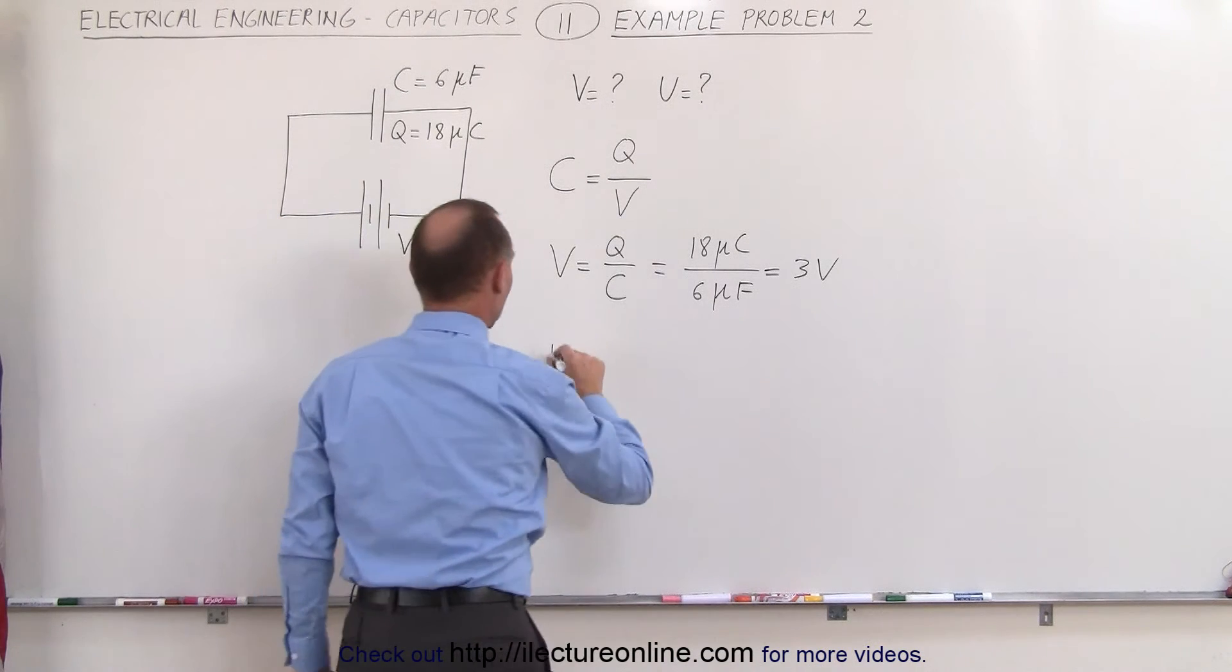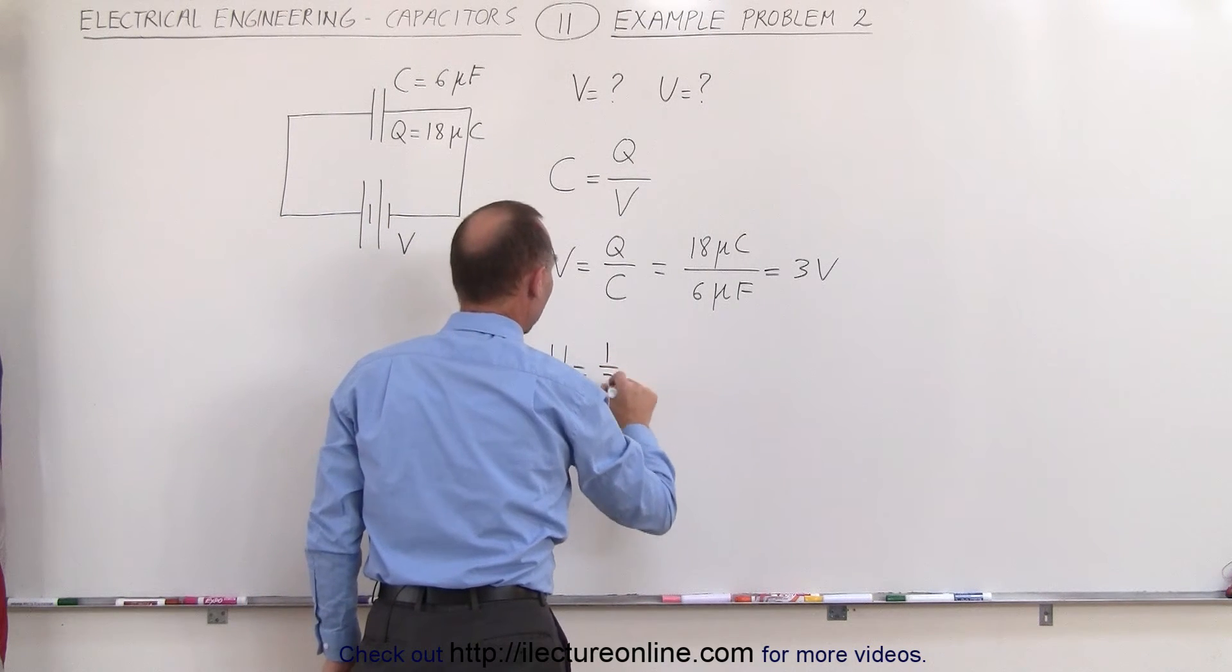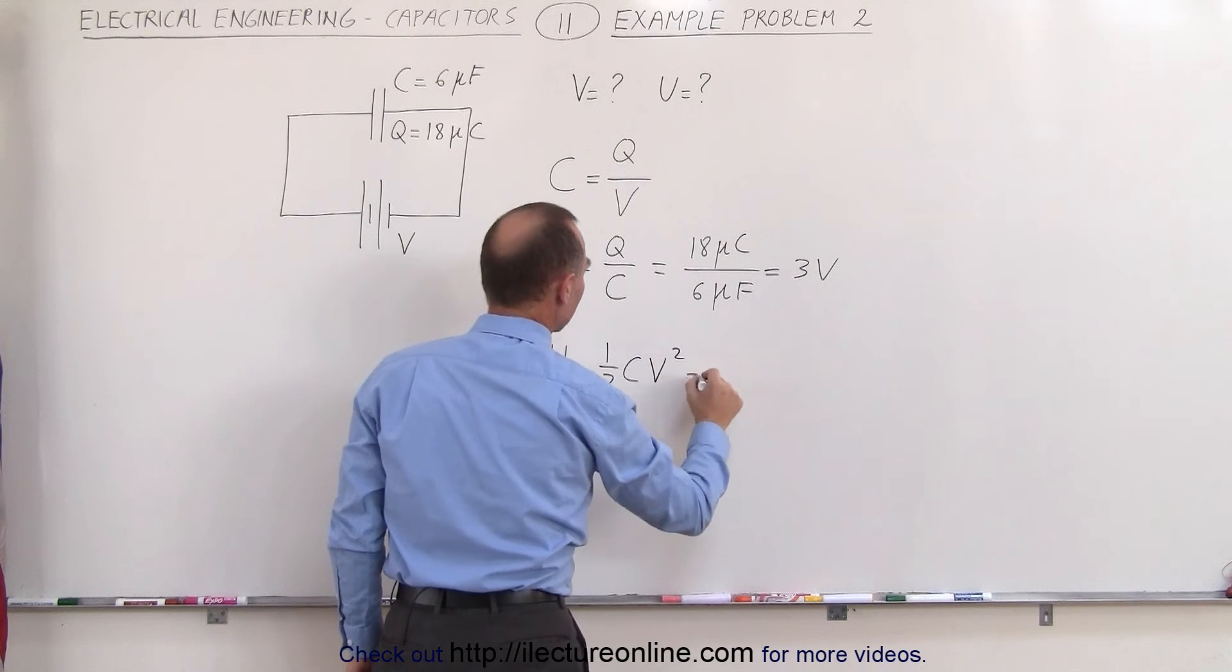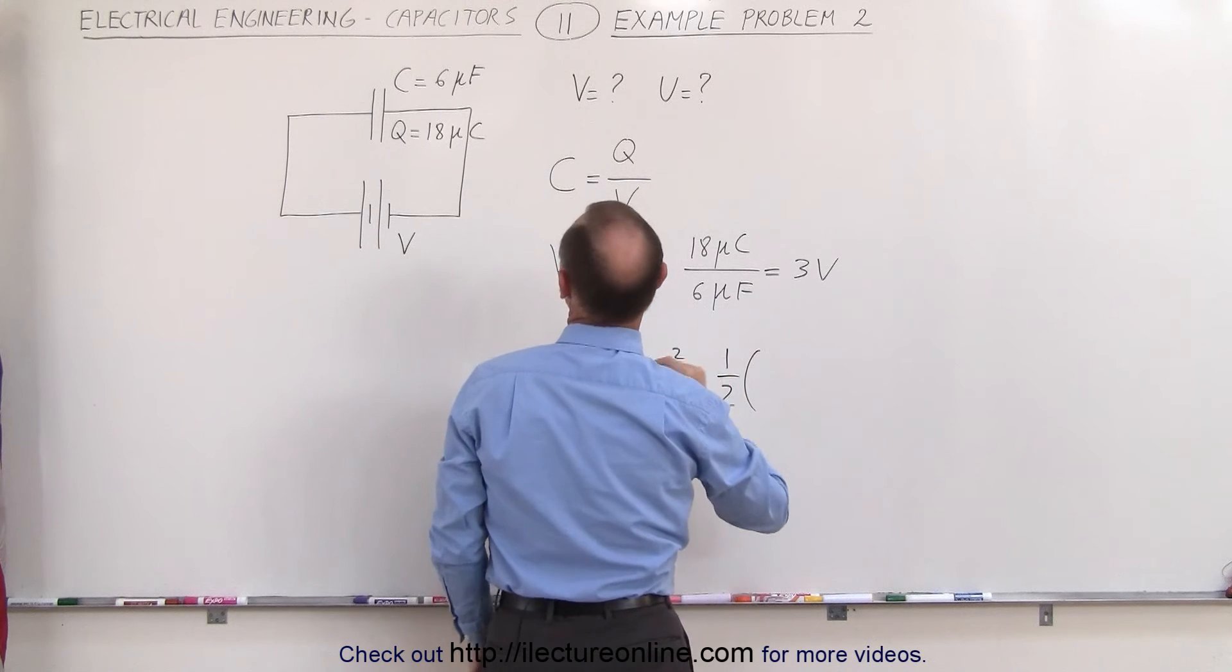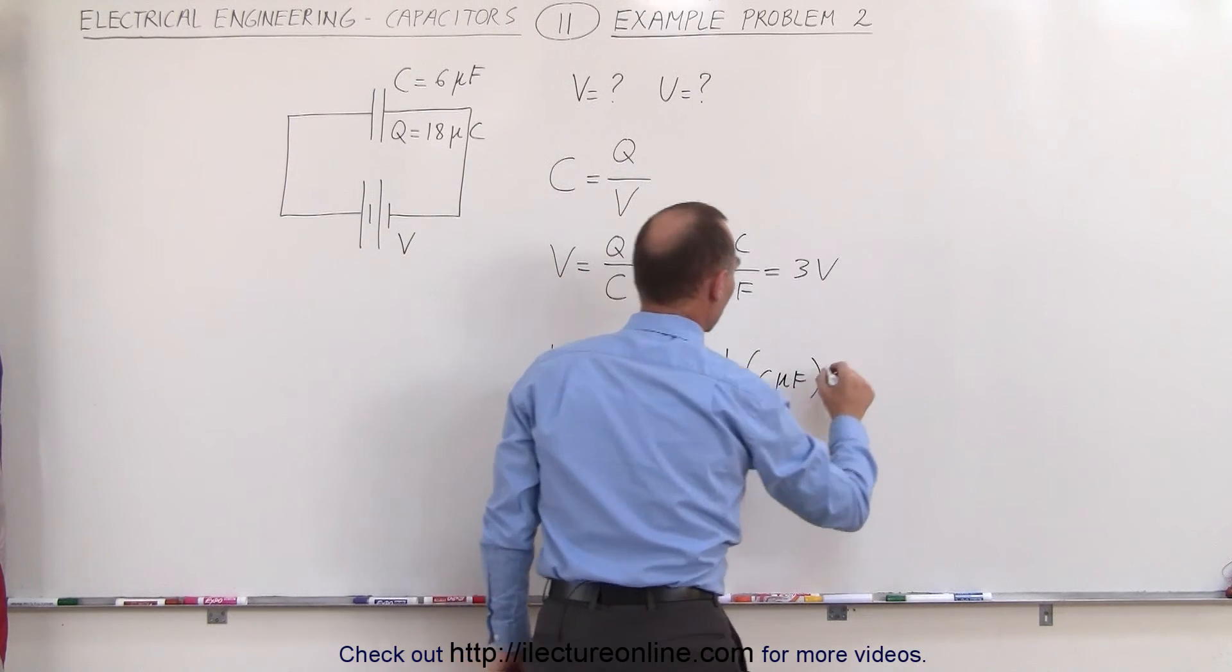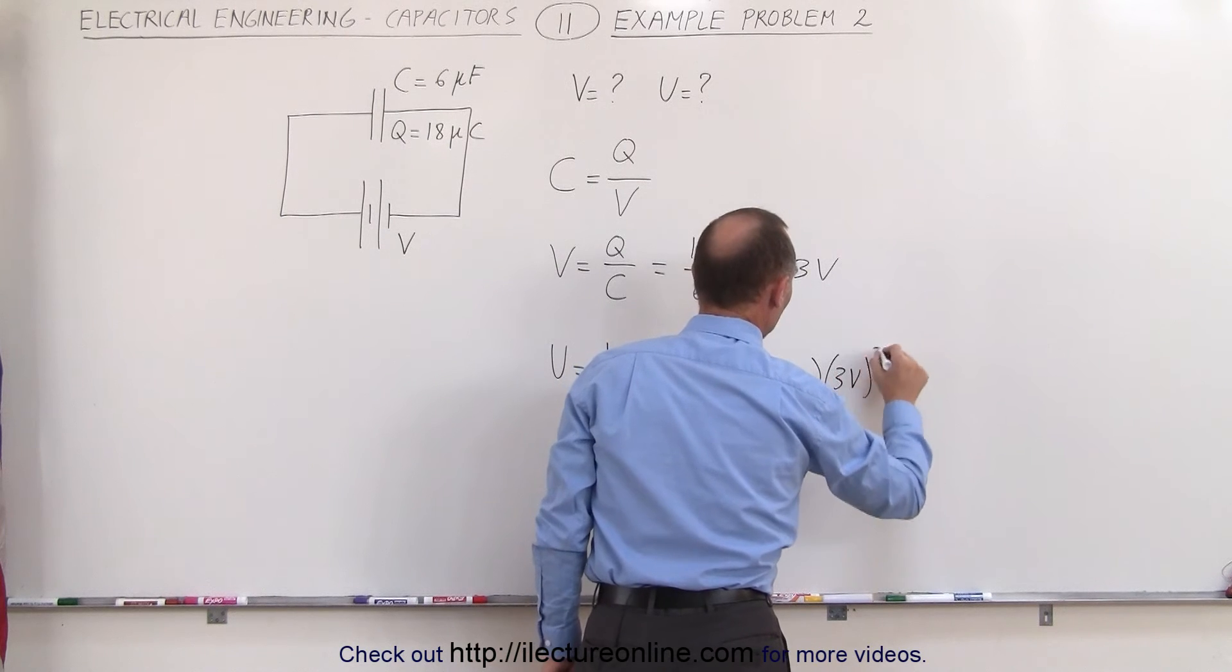The energy can then be found by saying that it's equal to 1 half times the capacitance times the voltage squared. In this case, that would be 1 half times the capacitance is 6 microfarads, and the voltage, now we know it's 3 volts, and we have to square that.